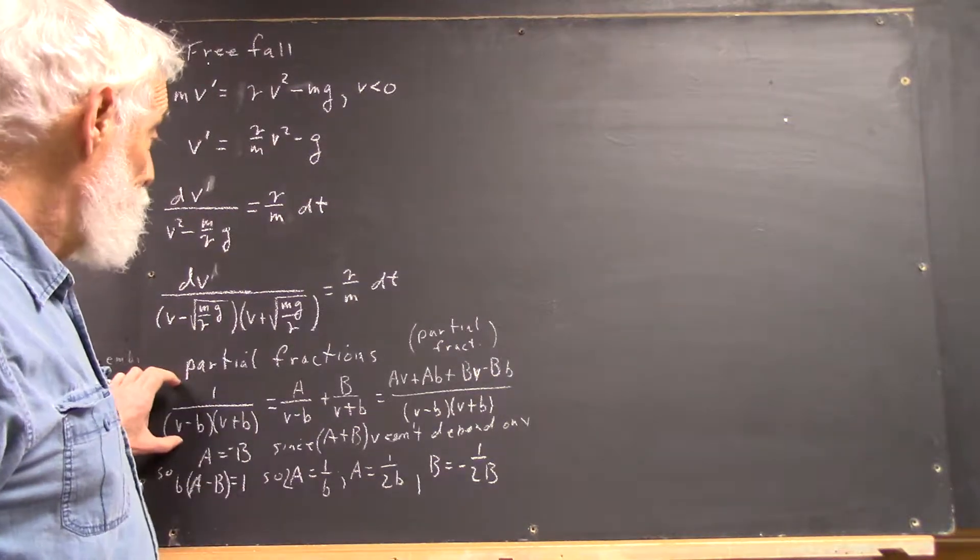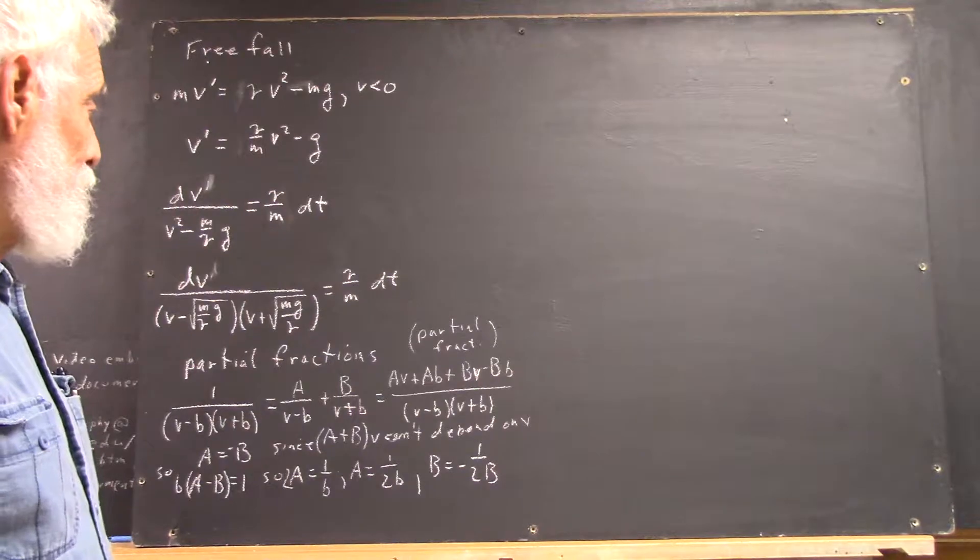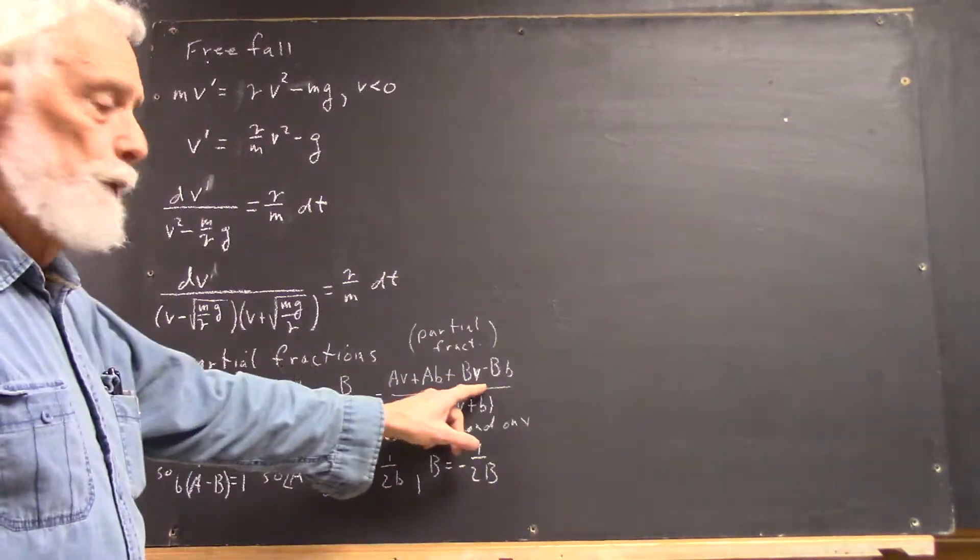Okay, well, this clearly simplifies to this, and that's not an issue. Now, this has to equal 1, no matter what the value of V is.